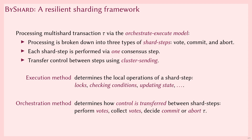We use three types of shard steps: namely vote steps, that are used by shards to determine whether they can commit and execute transactions; commit steps, that execute the transactions; and abort steps, that clean up transactions that cannot be executed. In this model, the execution method determines the local operations of a shard step — for example, obtaining locks, checking conditions on data, or releasing locks. The orchestration method determines how control is transferred between shard steps — for example, in which order individual shards vote whether they can commit, and how a final commit decision is made.